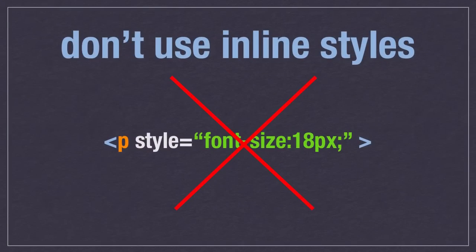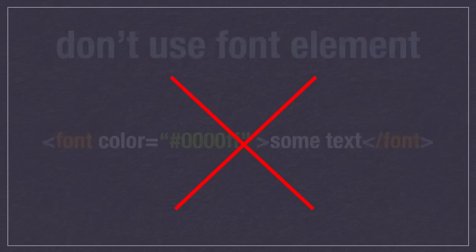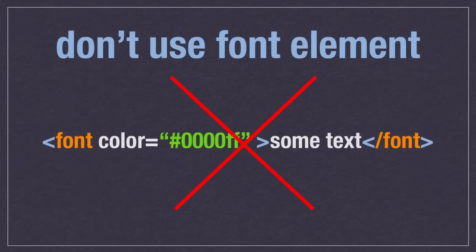How do you separate content from design? One way is to not use inline styles — that's using the style attribute in your HTML to style elements. If you use that, your design is right there in the HTML page. Another is to not use the font element, which is another way people style pages but is basically on its way out and not considered a great practice anymore.